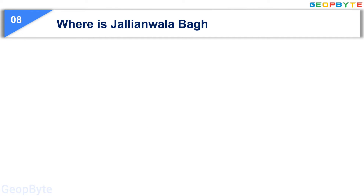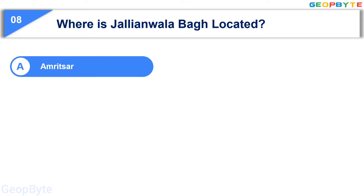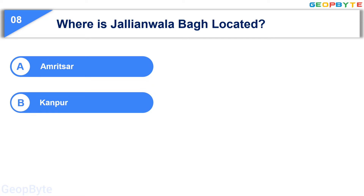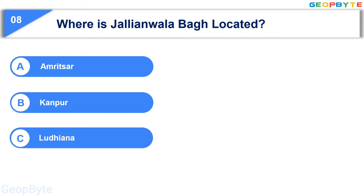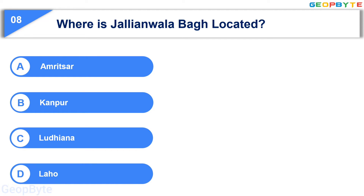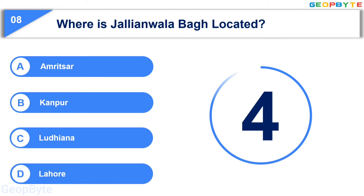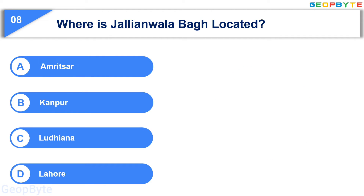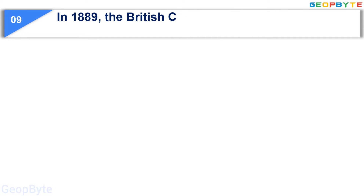Moving to the eighth question: where is Jallianwala Bagh located? Option A: Amritsar, Option B: Kanpur, Option C: Ludhiana, Option D: Lahore. Your time starts now. Your time is up and the correct answer is Option A: Amritsar.